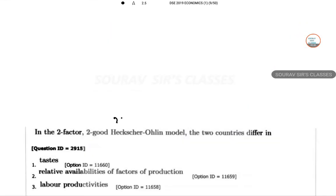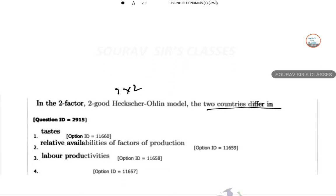So in a 2 cross 2, the two countries differ in which part? So the answer is relative availabilities of factors of production. So this is a relative concept, we have done it in the previous part also. So option number 2 is correct.